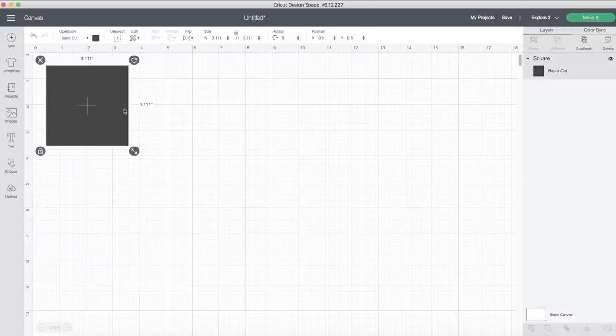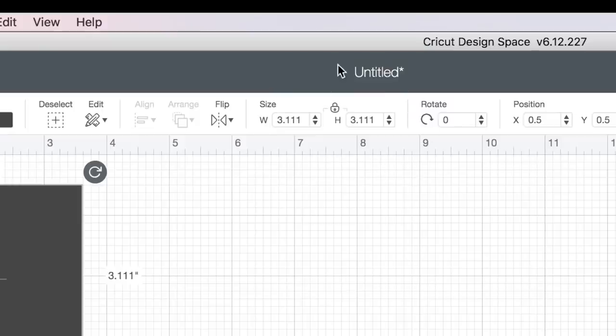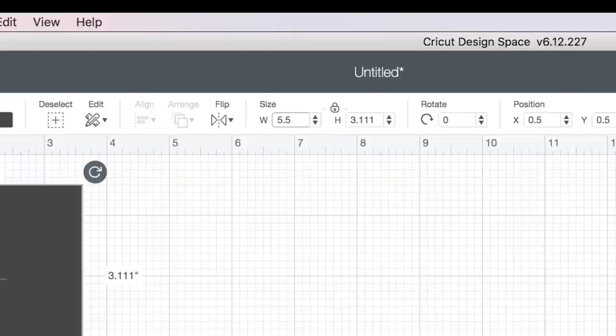Now we're going to go up here to the top and choose our tile size. Remember earlier when I decided I wanted them to be five and a half? Well, I also want them to be five and a half tall, so they're going to be a perfect square.